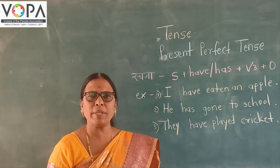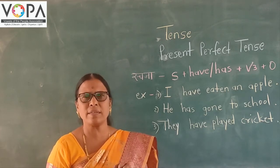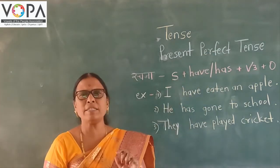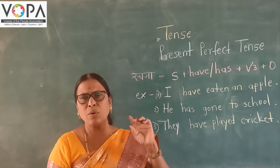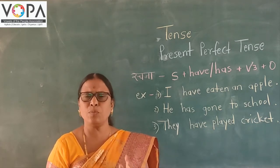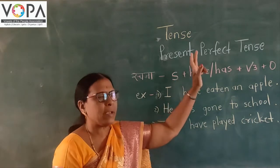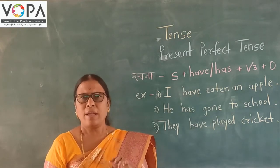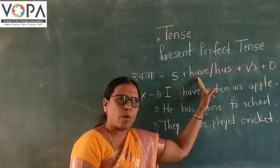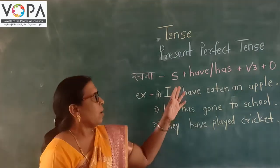The third kind of Present Tense is the Present Perfect Tense. Now we see the structure of this Tense. The structure is: Subject plus have or has plus V3 plus object.